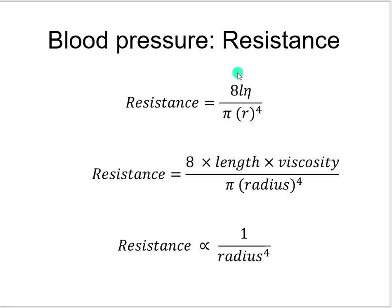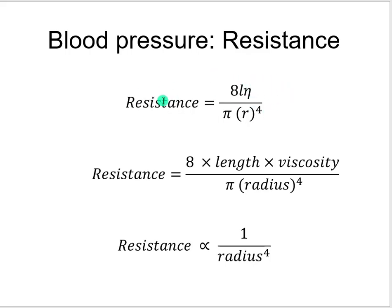Looking at the numerator, we have the number 8, L for length, and the Greek symbol eta — that's viscosity. If the numerator values go up with no change in the denominator, peripheral resistance will increase. On the other hand, if the denominator goes up without any change in the numerator, peripheral resistance will go down.